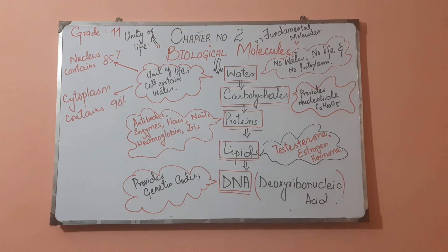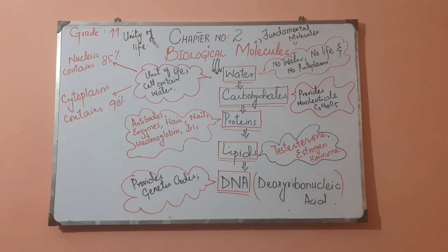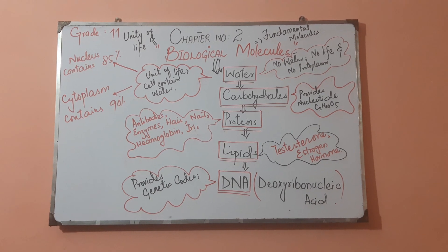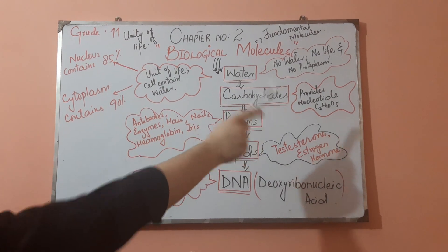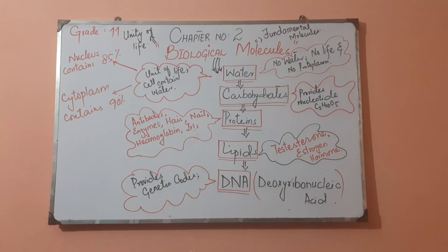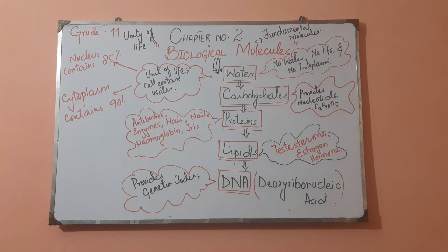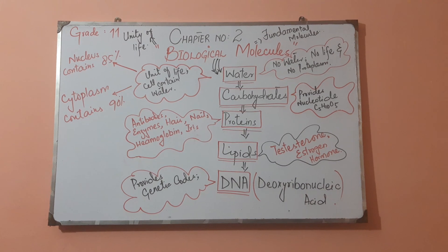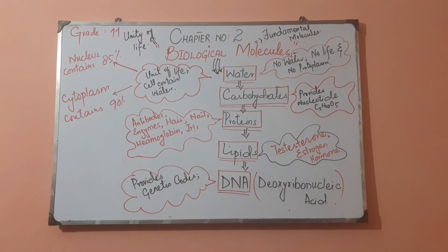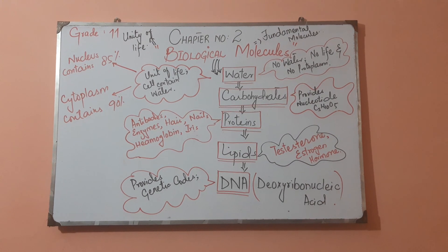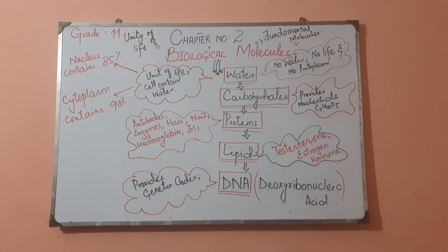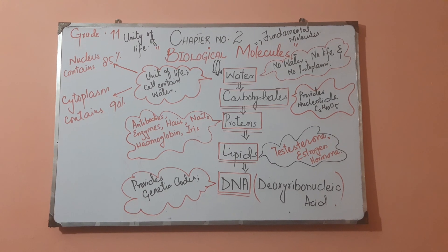Similarly, the same is the case with carbohydrates. Carbohydrates provide us nucleotides, whose formula is C5H10O5. Without this nucleotide we are unable to form DNA, and that DNA is responsible for the expression of our whole characters. So when DNA is not there, how will we define and present different characters?